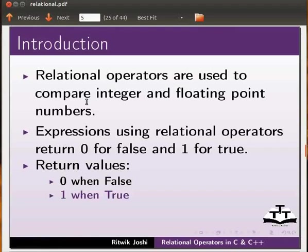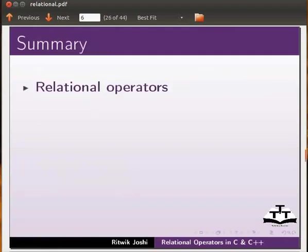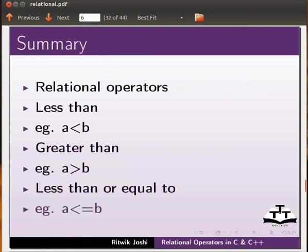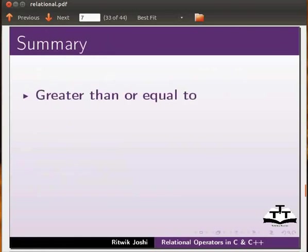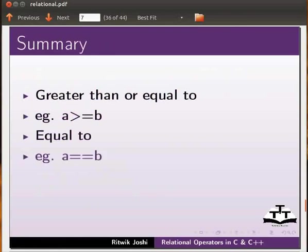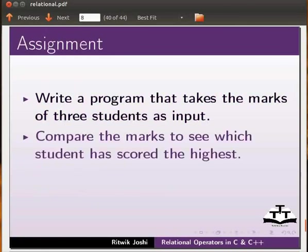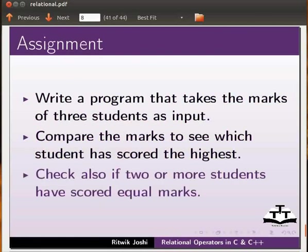Let us now summarize the tutorial. In this tutorial we learnt relational operators: less than (a < b), greater than (a > b), less than or equal to (a <= b), greater than or equal to (a >= b), equal to (a == b), and not equal to (a != b). As an assignment, write a program that takes the marks of 3 students as input, compares the marks to see which student has scored the highest, and checks if two or more students have scored equal marks.